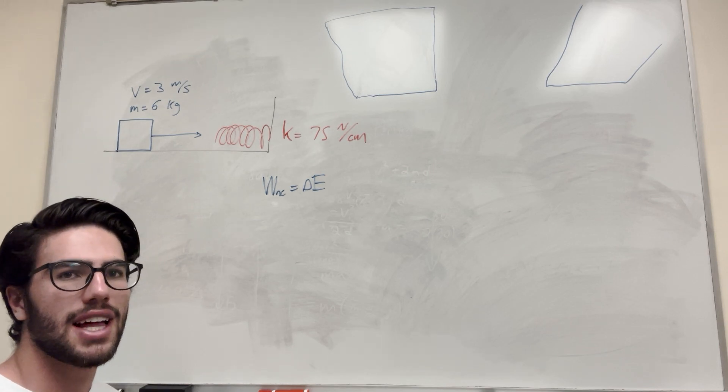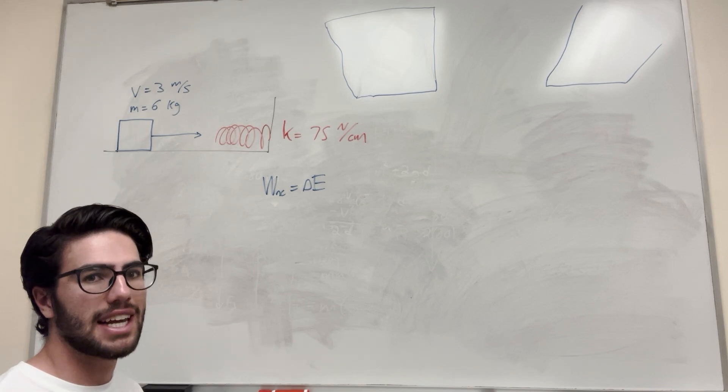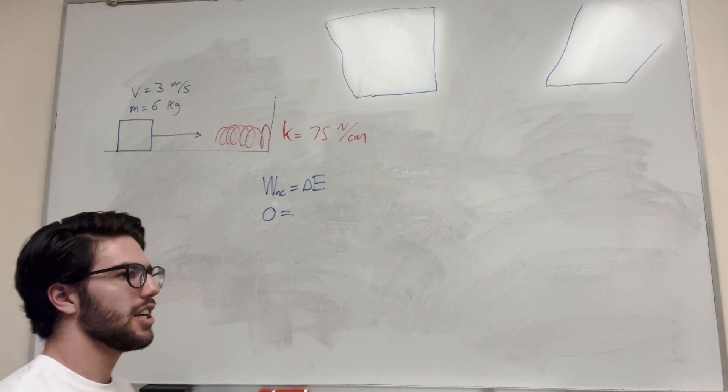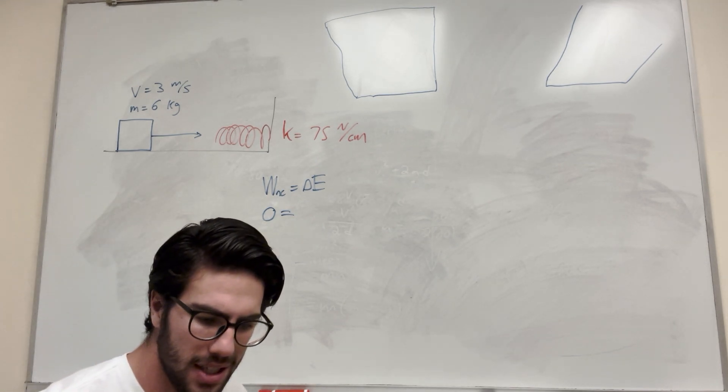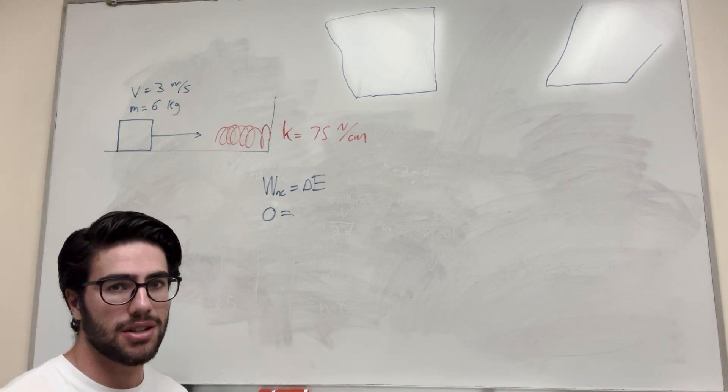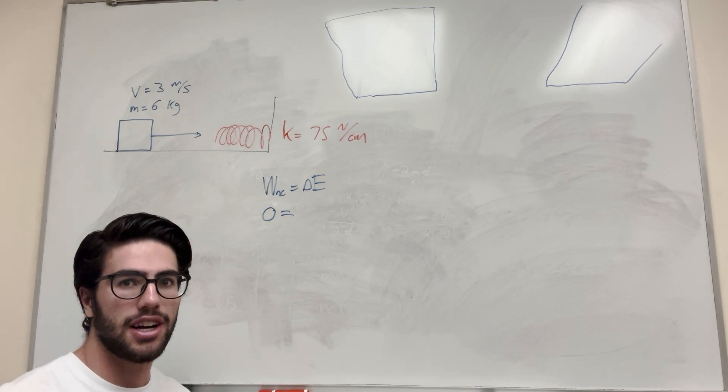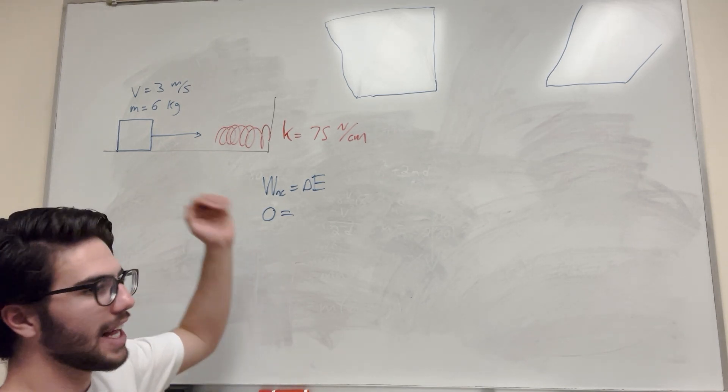We are not thinking about that in this equation. Basically we're going to say that there's nothing acting on the system that's taking away energy, so work non-conservative is going to equal zero. So change in energy is all of our things that could be acting on the spring. Usually there's things like gravitational work, so change in height that changes the potential energy to kinetic energy. That's not something we have to consider in this equation because it's on a flat surface.